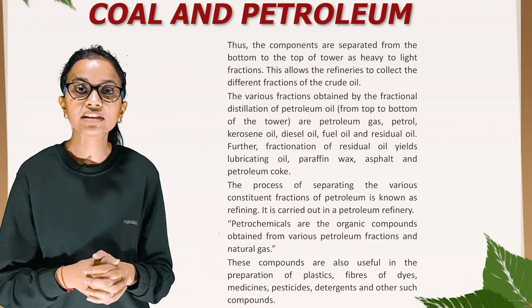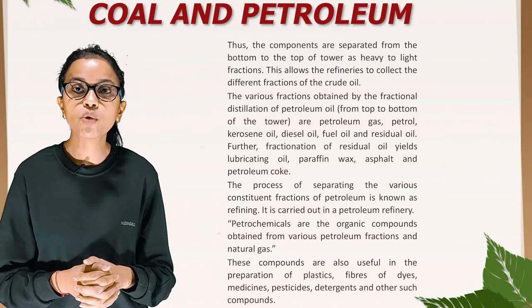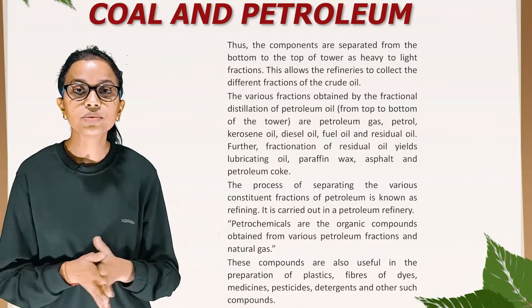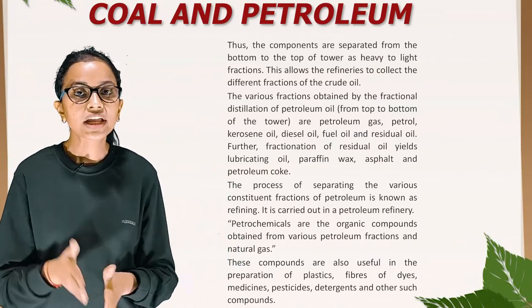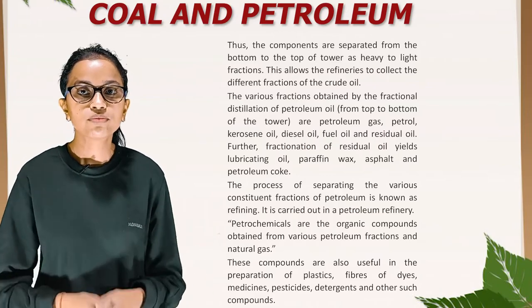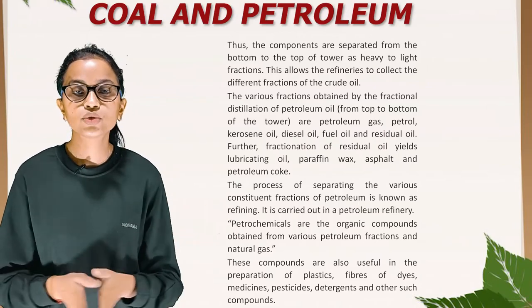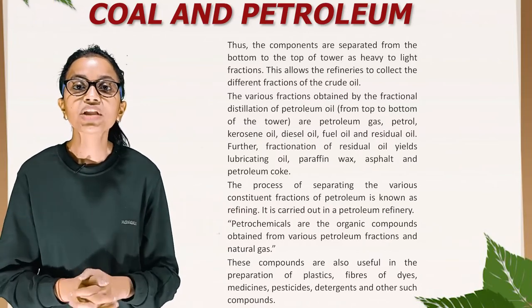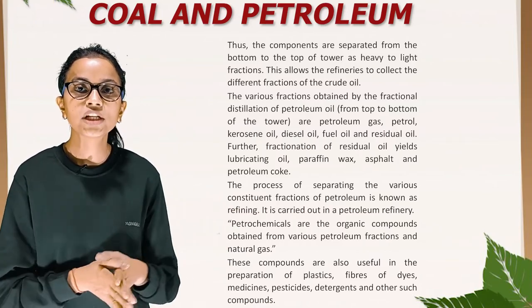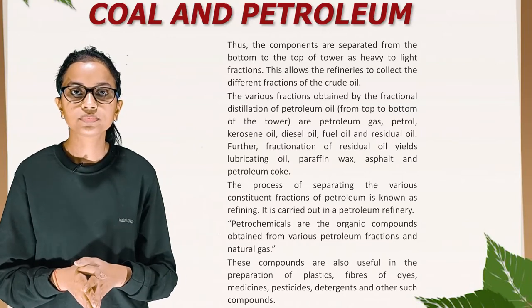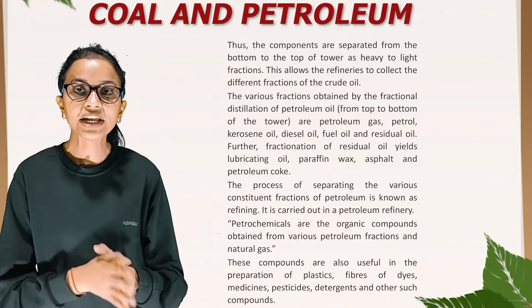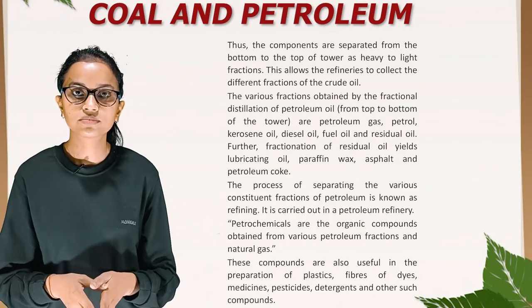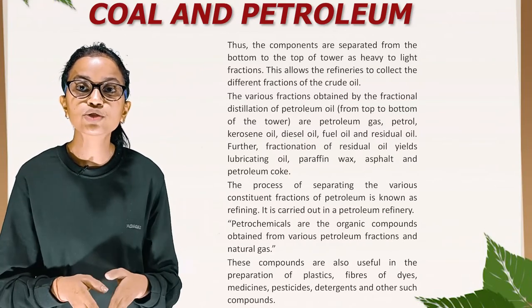The various fractions obtained by the fractional distillation of petroleum from top to bottom of the tower are: petroleum gas, petrol, kerosene oil, diesel oil, fuel oil and residual oil. Further fractionation of residual oil yields lubricating oil, paraffin wax, asphalt and petroleum coke. The process of separating the various constituent fractions of petroleum is known as refining, and it is carried out in a petroleum refinery.